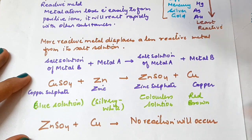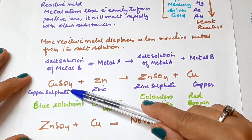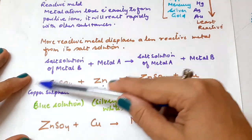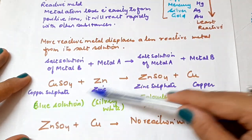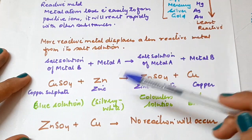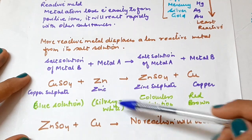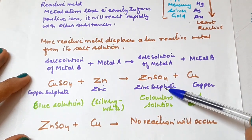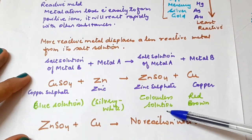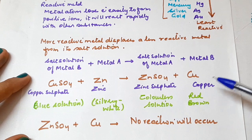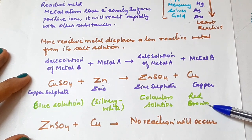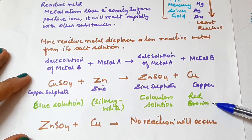Copper sulfate is a blue solution, and the color of zinc is silvery white. Zinc sulfate, which is formed, is a colorless solution. And the copper that is separated out is of red-brown color.